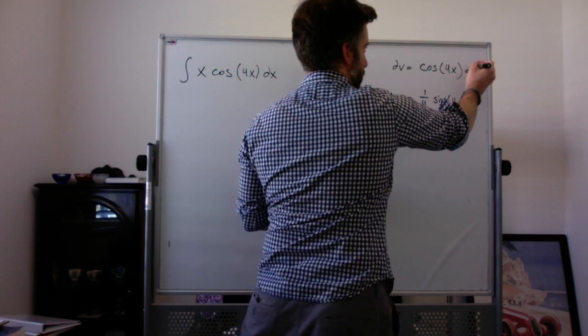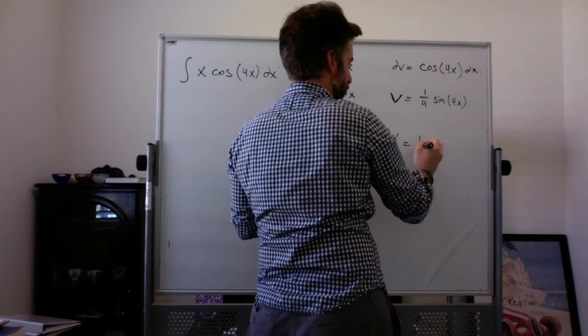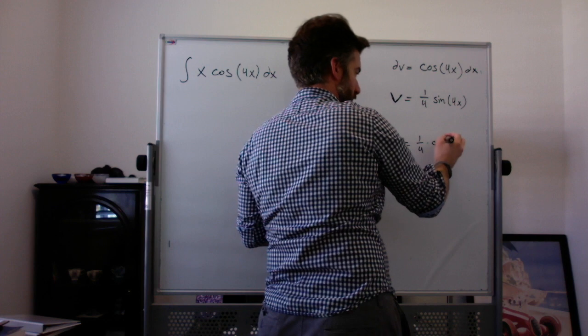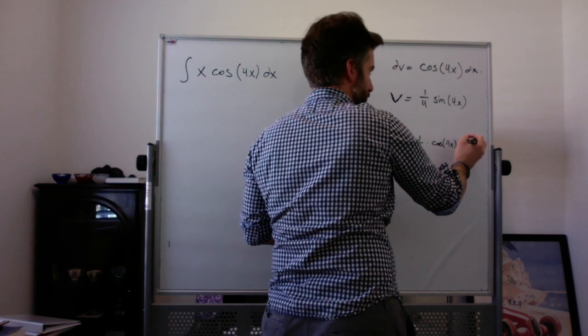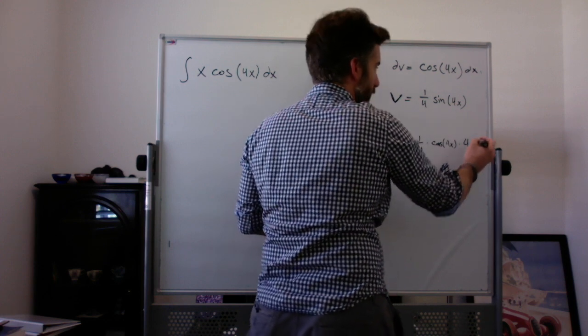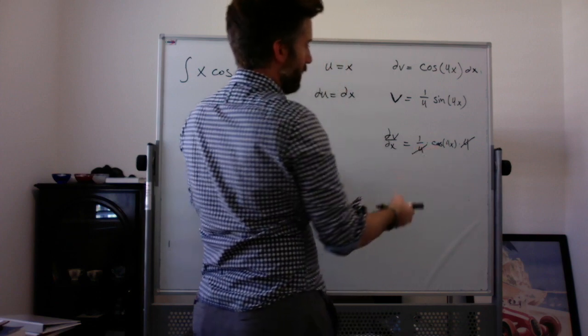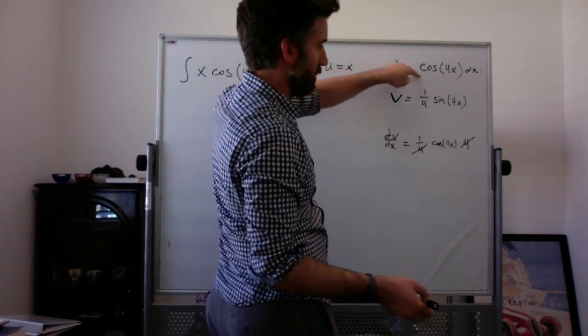It's equal to 1 fourth times the derivative of sine of some stuff is cosine of the stuff times the derivative of 4x, which is 4. And that 4 cancels with that 4. And so your dv/dx is exactly cosine of 4x.